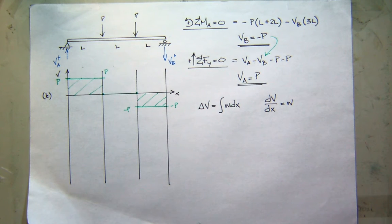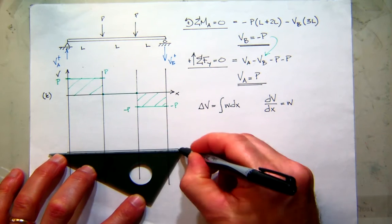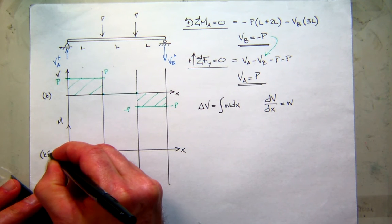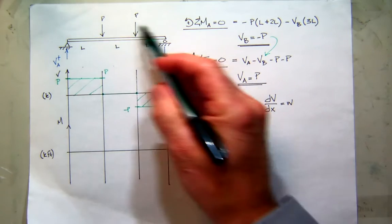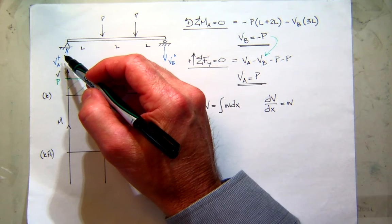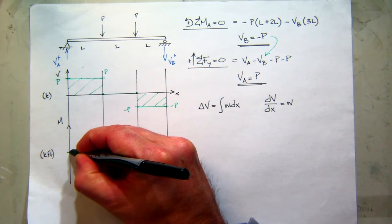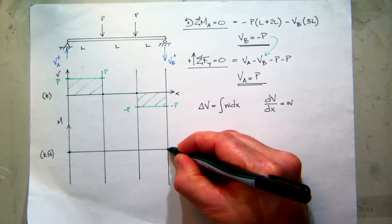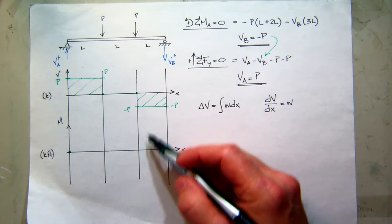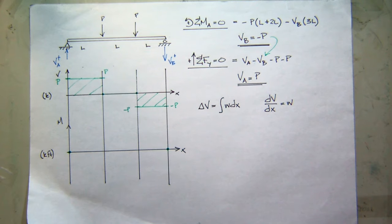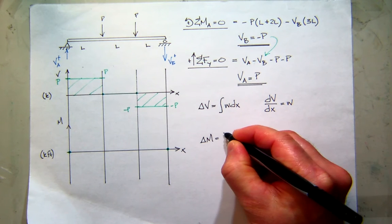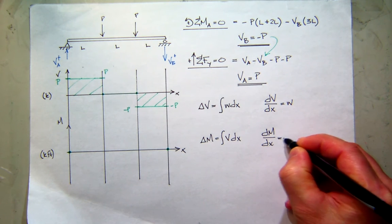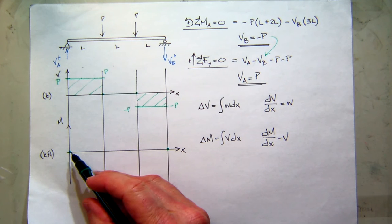Now that we have the shear diagram, let's build the moment diagram. Assume positive x and positive moment, with units of kip-feet. What do we know about moment in this structure? The moment at x equals zero is zero — so I start at zero. The moment at B is also zero — so I need to land back at zero. The key relationships are: the change in moment is the area under the shear diagram, and the slope of the moment diagram is equal to the shear.